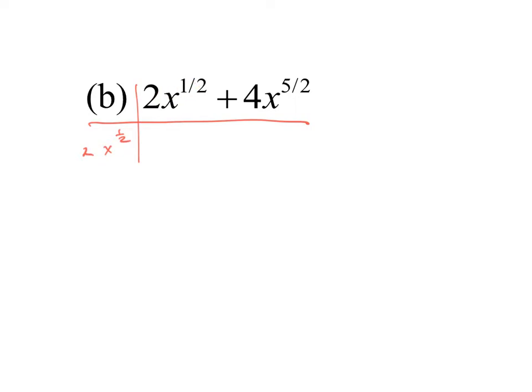Now I think about what is 2x to the one half divided by 2x to the one half — that would simply be 1. Then what is 4x to the five halves divided by 2x to the one half? 4 divided by 2 is 2, and for x to the five halves divided by x to the one half, we subtract the powers: five halves minus one half is four halves, which is 2. So factoring gives us 2x to the one half times 1 plus 2x squared.